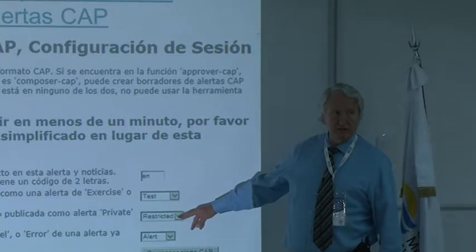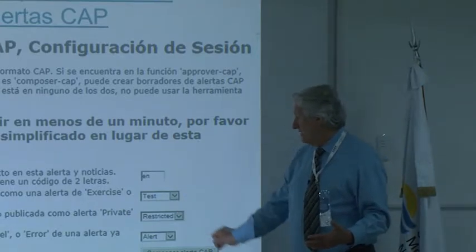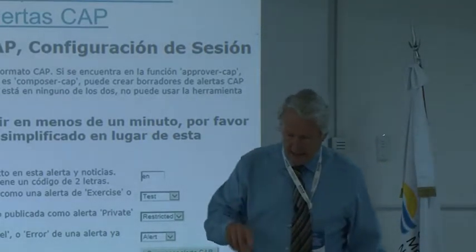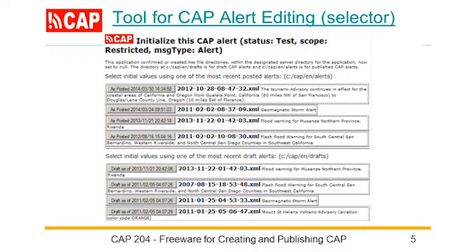You also set whether it is a test, an actual, or an exercise — a little pull-down box. Are you talking to just a restricted or single person, or are you talking to everybody? That's the scope. Then, is this an original alert or are you updating a prior alert? Figure out what you're doing and hit the Compose button. Next you see a screen that lets you choose one of the draft alerts, because you may not be finished with it yet, or you could say I want to start a new alert from a previously published alert. The reality in emergency alerting is what you're alerting about has probably occurred before, so rather than give you a completely blank screen, you start from something you've already done.